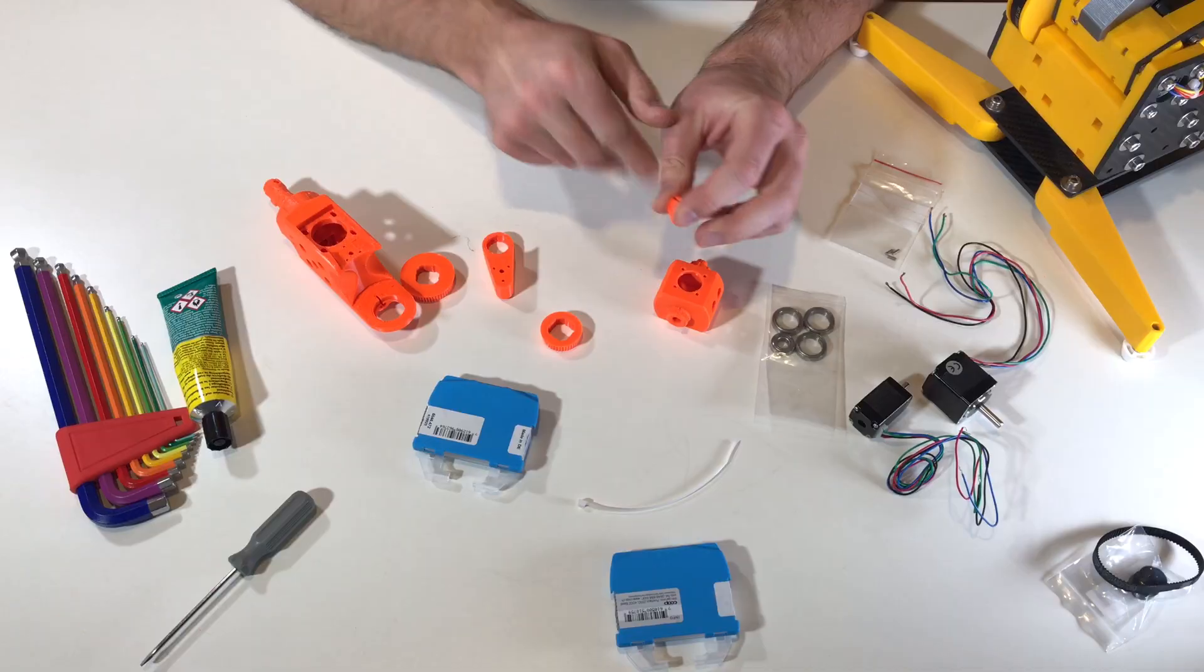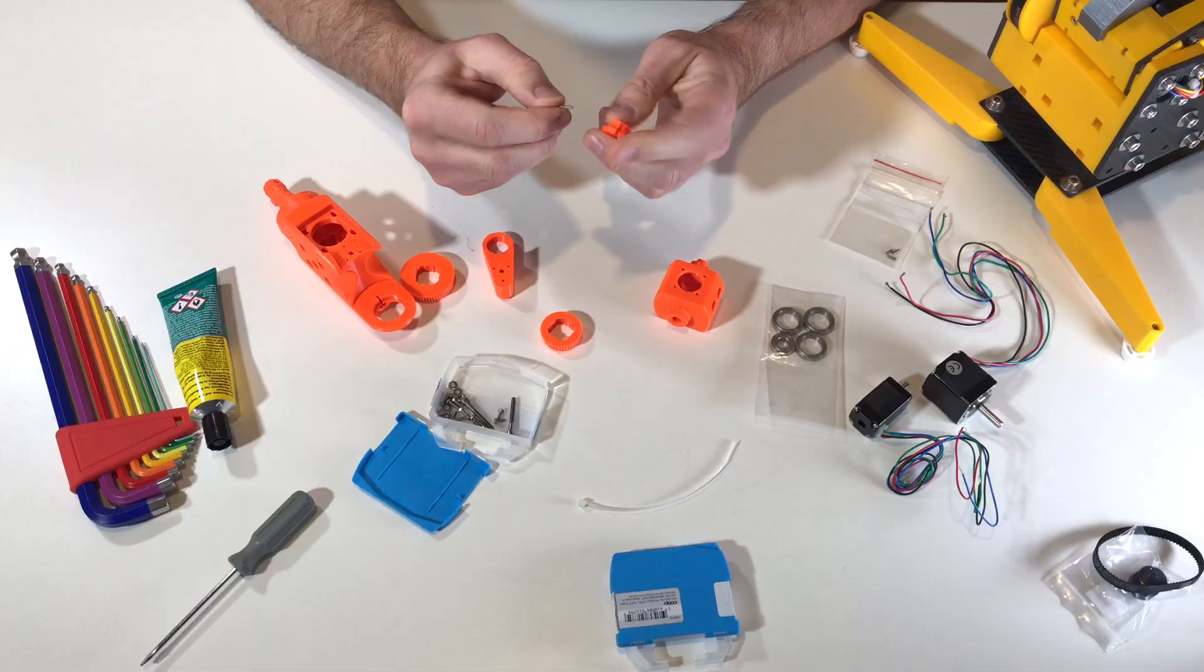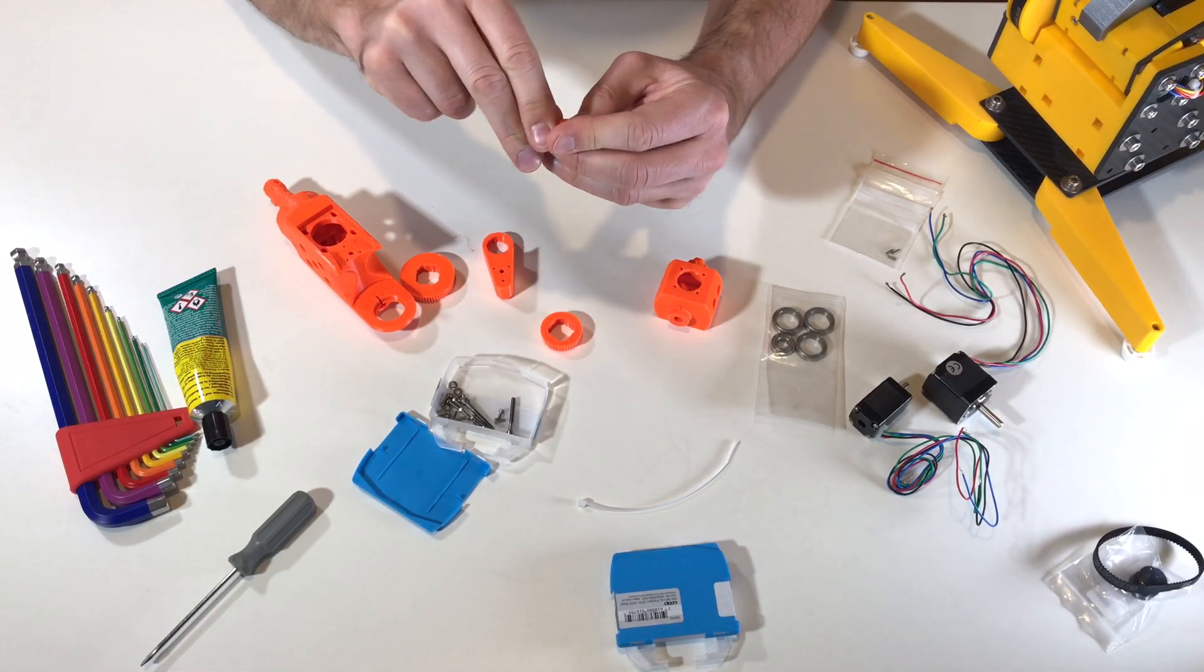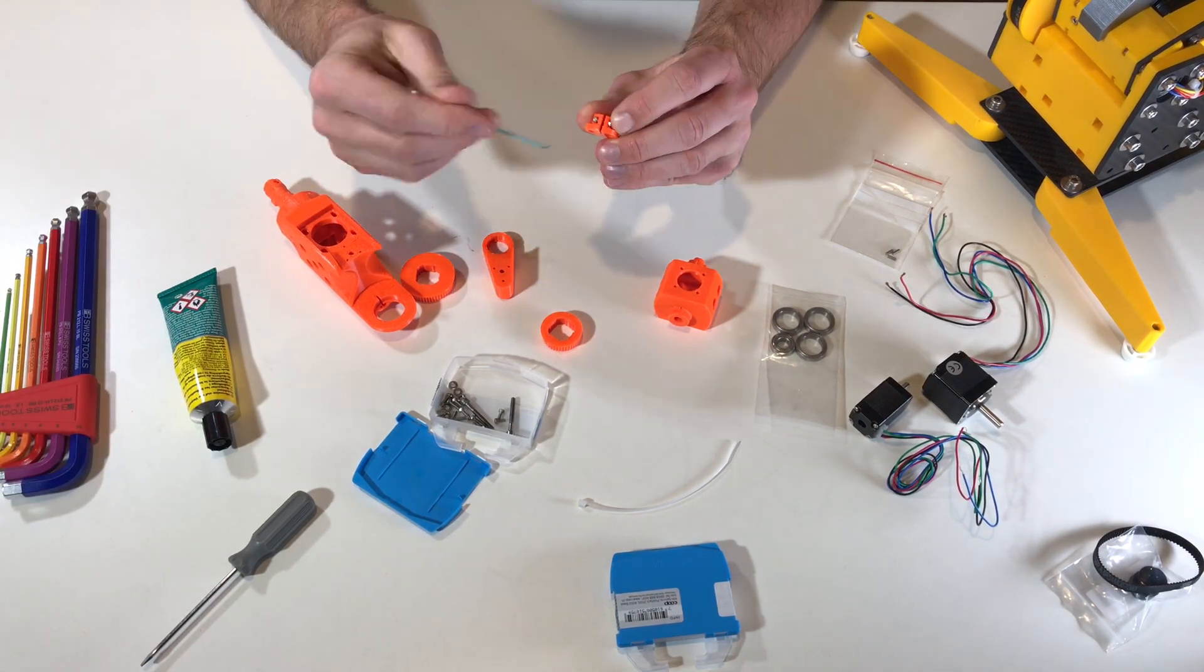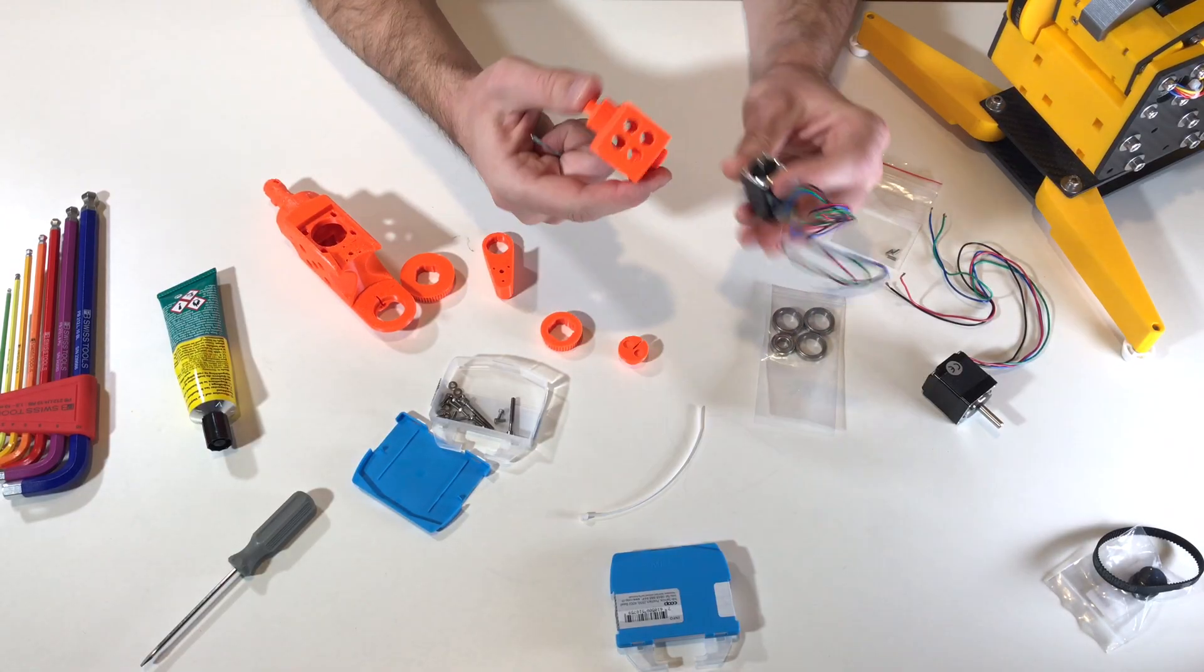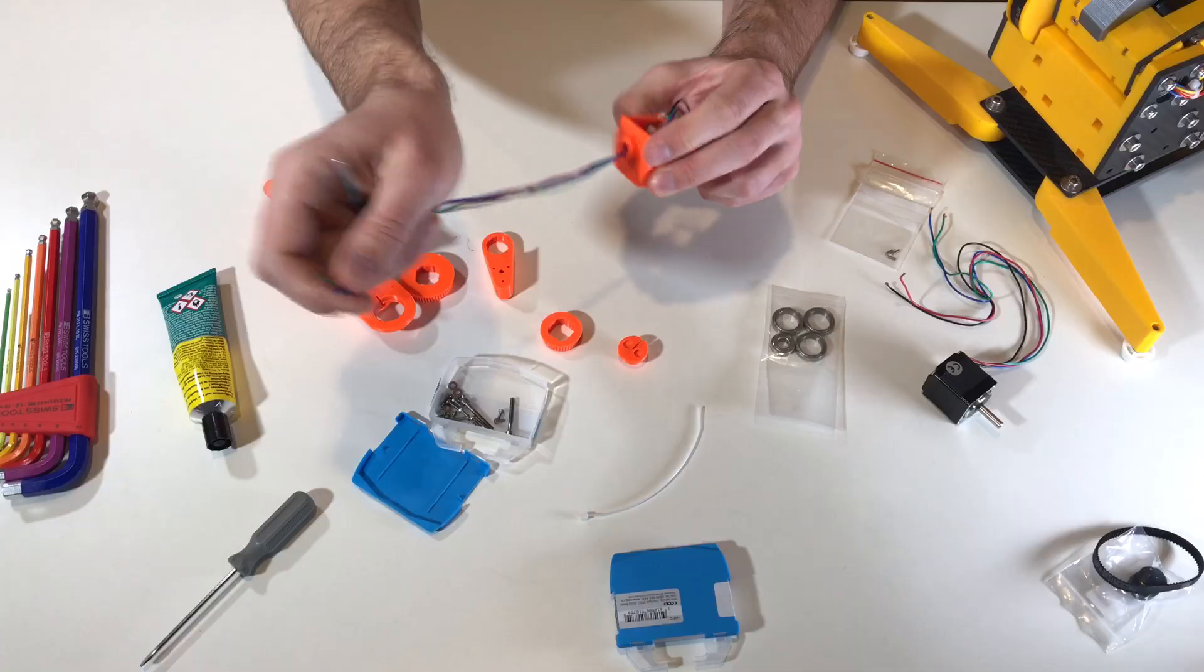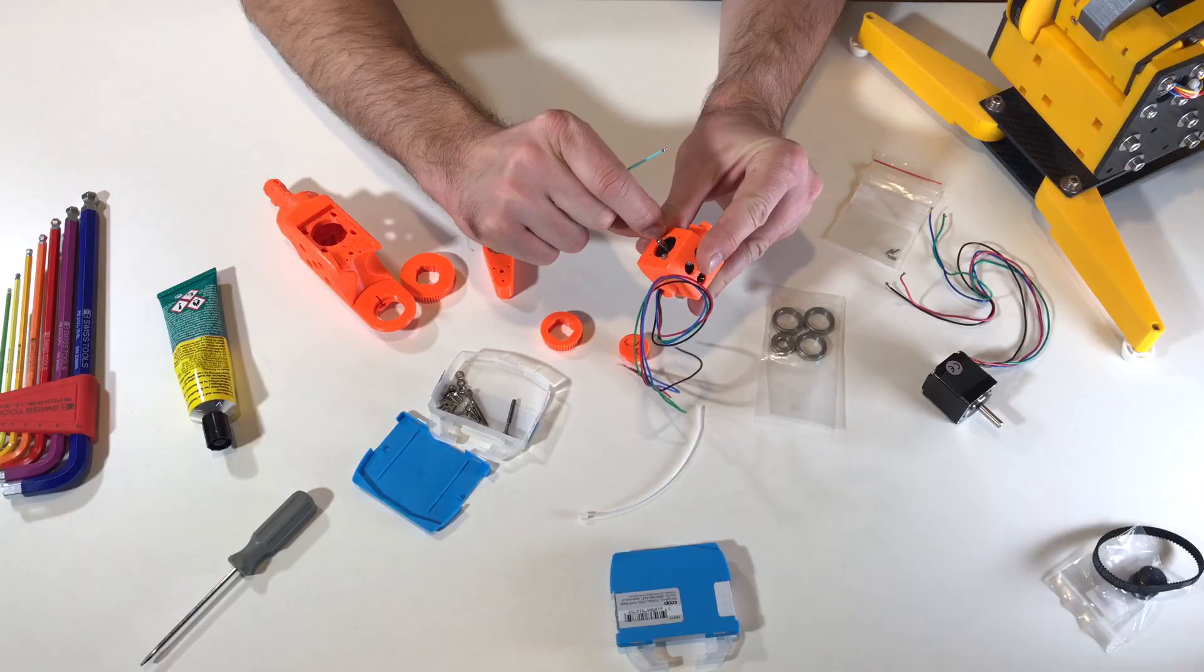We will start with this piece. So we need a small screw to put in this hole. And there is a nut. Just like this. Next let's fix this motor here. So wires go to this hole. And we'll secure the motor with the small M2 screws.